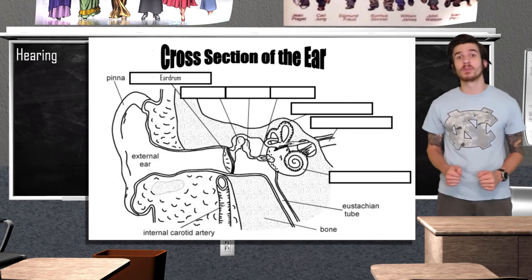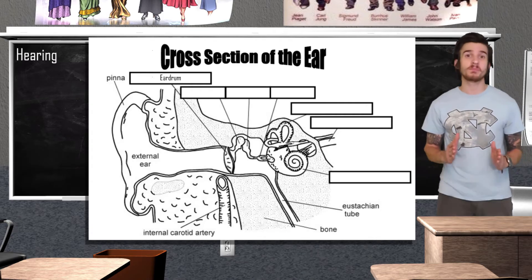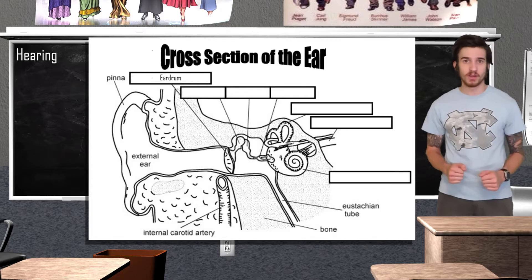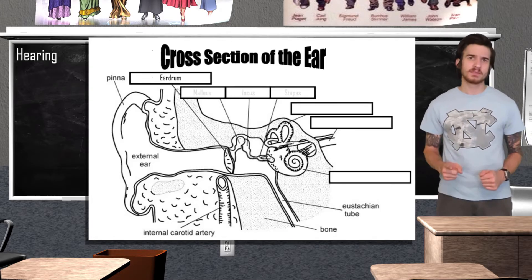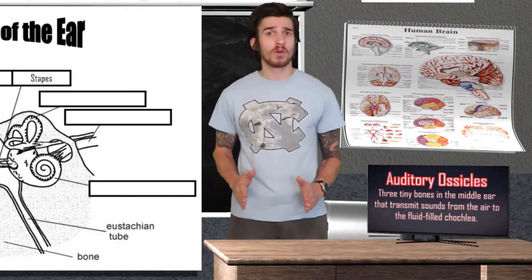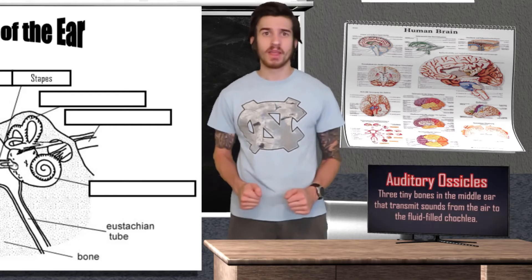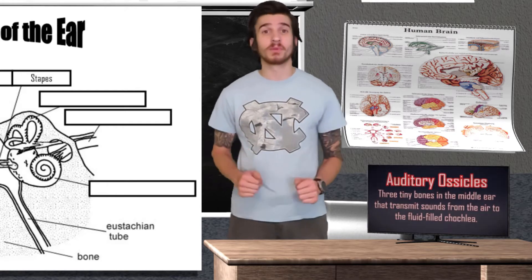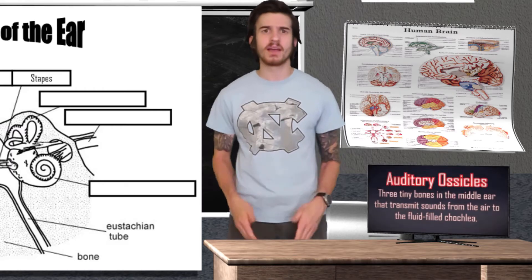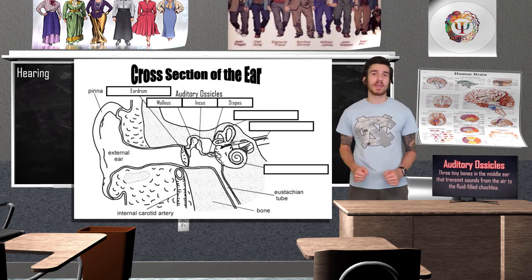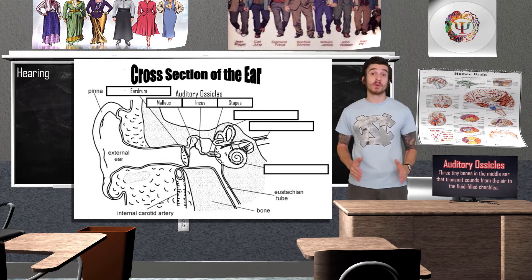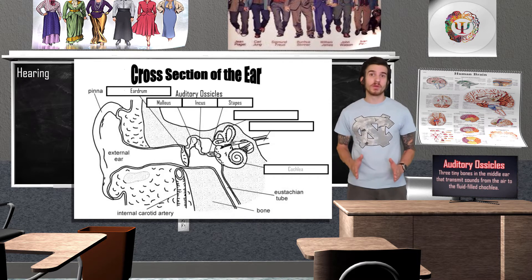The vibrating eardrum, in turn, causes tiny bones in our ear to also vibrate. There are three of these tiny bones, called the malleus, incus, and stapes — also called the hammer, anvil, and stirrup. We are going to simply refer to these three tiny bones as auditory ossicles. The absence of these ossicles can lead to moderate to severe hearing loss. These bones are going to amplify sound waves and send them to the cochlea.